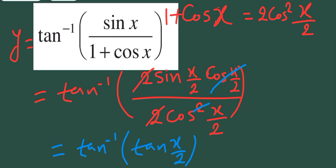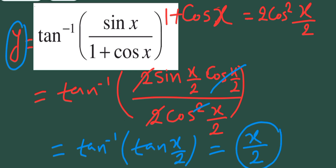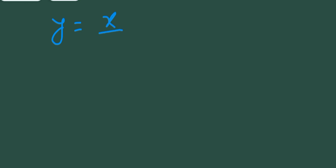Using the inverse trigonometric property, tan inverse of tan(x/2) simplifies to just x/2, since the tan and tan inverse cancel each other. So ultimately y is equal to x/2.